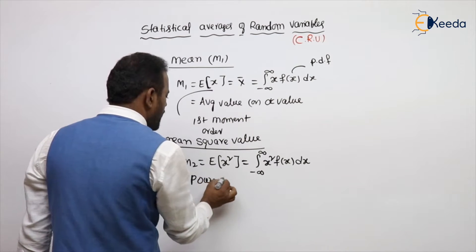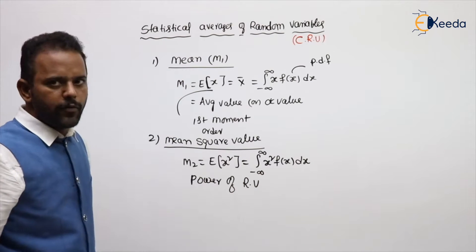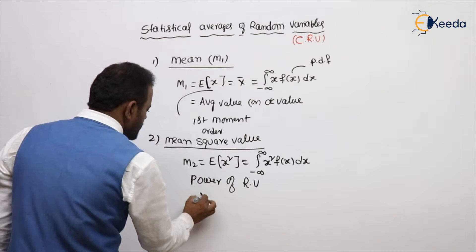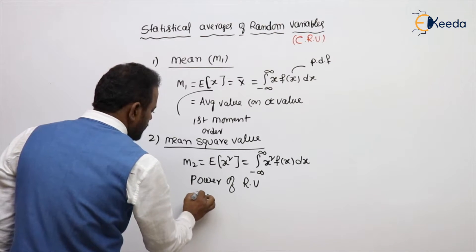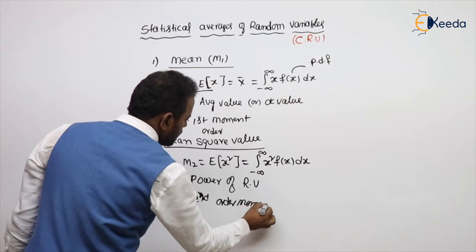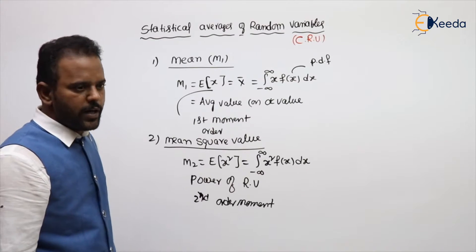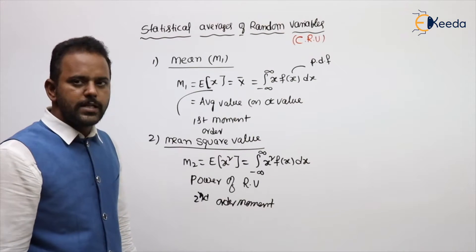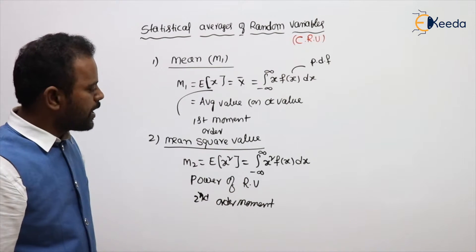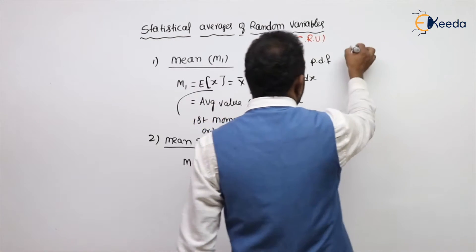The mean square value represents the power of a random variable, or power of a signal. This is also called the second order moment. So the formula for power of a random variable is the integral from minus infinity to plus infinity of x squared times f(x) dx.